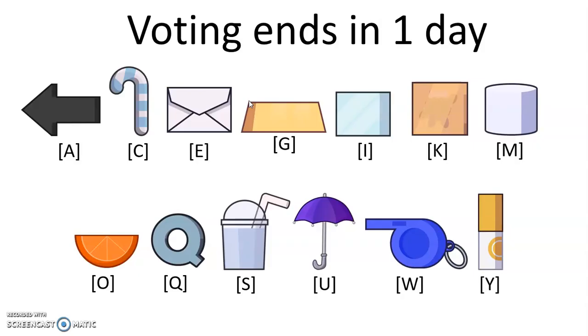Alright viewers, and that's it. Vote for arrow, candy cane, envelope, gold bar, ice cube, keby image, marshmallow, orange slice, cube, slushy, umbrella, or whistle